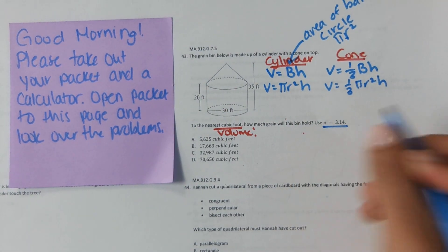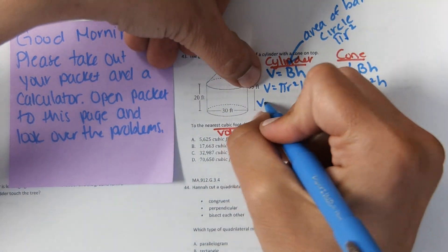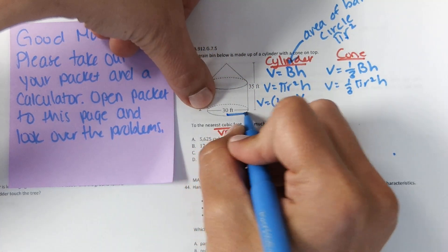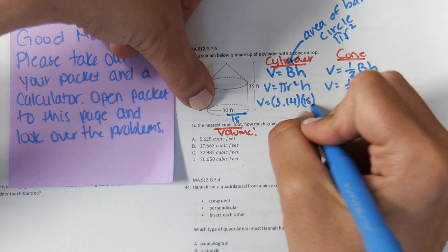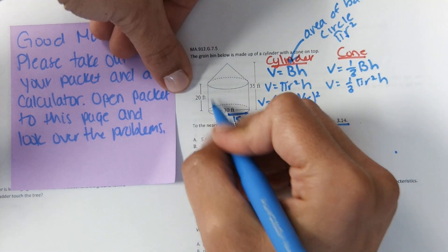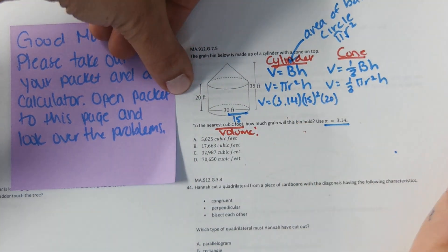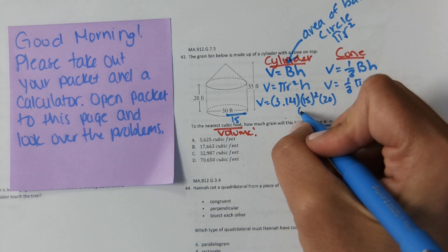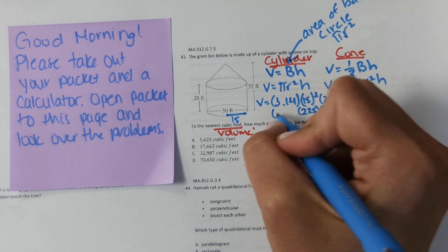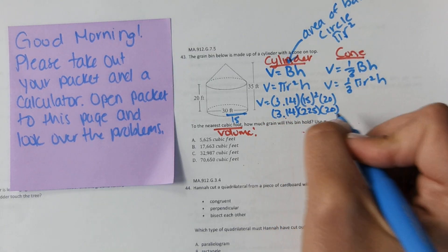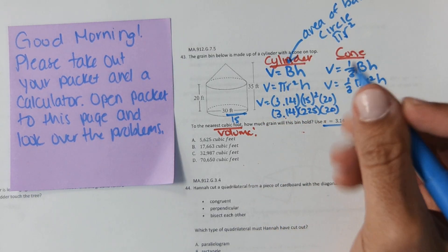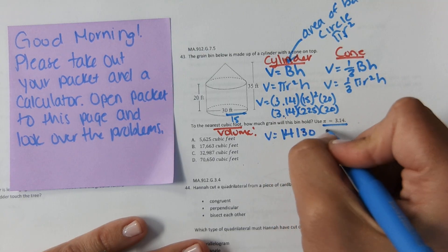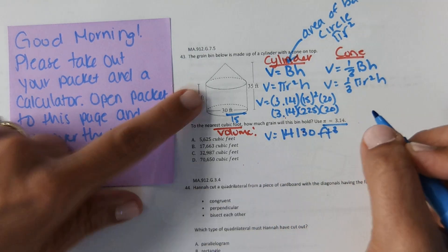It says to use 3.14 for pi, so we're going to plug that in. Volume equals 3.14. The radius would be half of the 30, which would be 15. And then the height of the cylinder part is 20. Solving this, use order of operations: 15 squared is 225 times 20 times 3.14. Multiply those three numbers and it comes out to 14,130 feet cubed. So that's the volume of the cylinder piece.